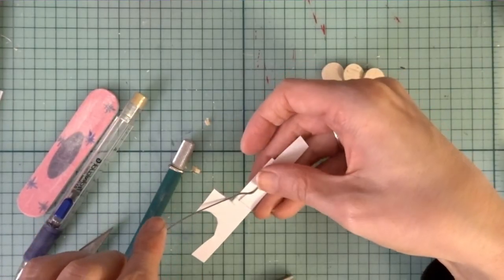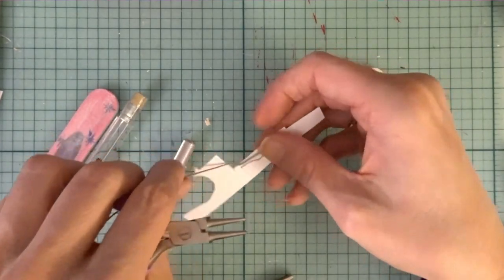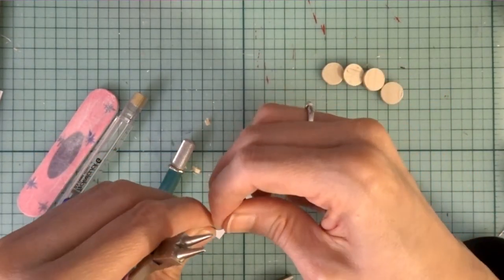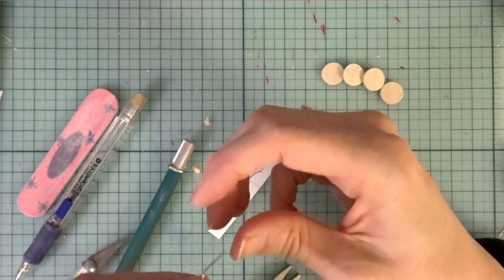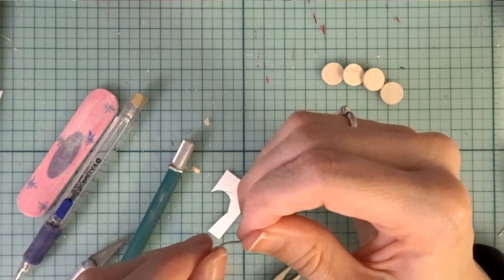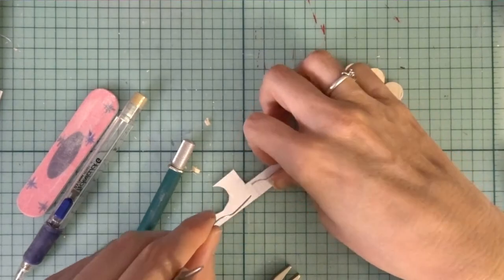I sort of traced out how I wanted the wire to look, and now I'm forming it with my fingers and with a little wire plier. I need to make 16 of these.